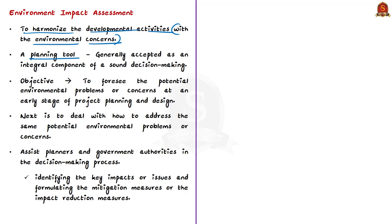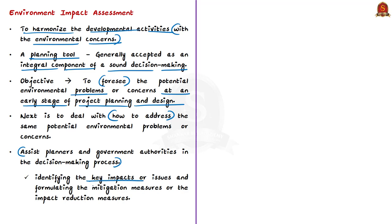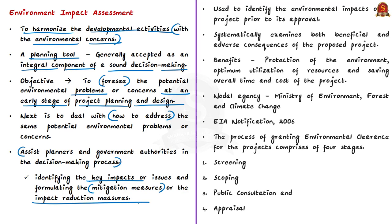The objective of Environment Impact Assessment is to foresee or predict potential environmental problems at an early stage of project planning and design, and to address those potential concerns. EIA assists planners and government authorities in the decision-making process by identifying key impacts and formulating mitigation strategies. EIA is a process used to identify the environmental impacts of a project prior to its approval. The assessment systematically examines both beneficial and adverse consequences of a proposed project, ensuring that environmental impact and mitigation measures are considered during the project design stage itself.